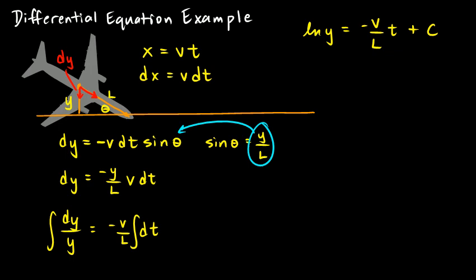Now, to solve this for y, we need to exponentiate both sides with base e. A base e exponent will get rid of our base e logarithm. So, y ends up equaling e to the power of negative v over lt. And I'll write it like this: negative vt over l plus c. And all of this is up here in the exponent position.